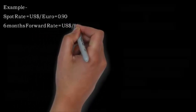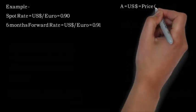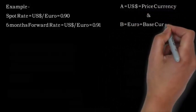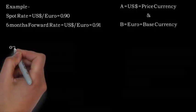For better understanding, let's look at an example. The spot rate is 0.90 and the 6-month forward rate is 0.91. Here, the US dollar (A) is the price currency and the Euro is the base currency.